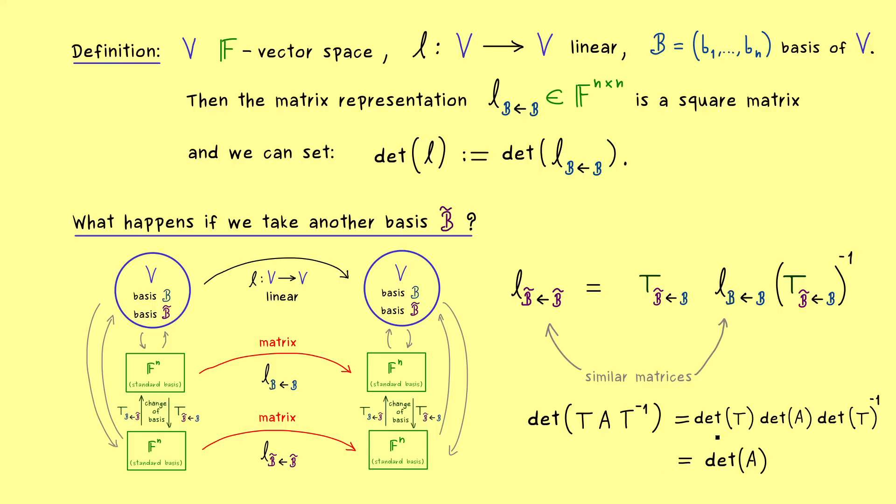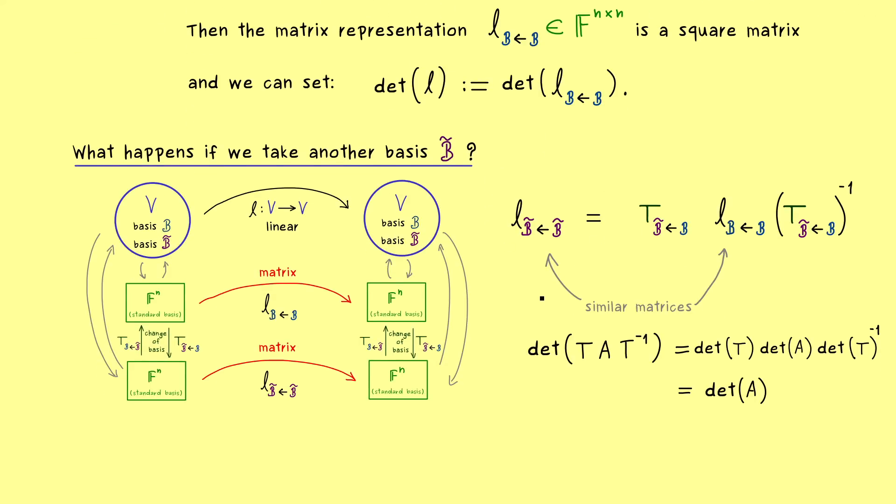In other words, this formula already tells us, that the determinant of our new matrix representation, is the same as the determinant of our original matrix representation. So our conclusion is, that the determinant of the linear map L, is well defined with the definition here.